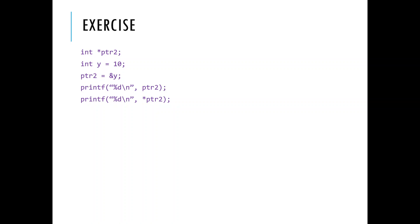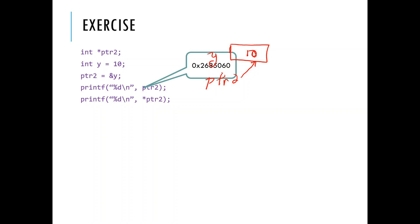We did this exercise last time: pointer2 is just some pointer in space, and variable y equals 10. If I change pointer2 to point to wherever y is, and I print pointer2 I get some weird address like 0x1234567 — some position in memory. The second line, I dereference it — I look inside the bucket — and I get the value 10. First line: an address in space. Second line: the value 10.